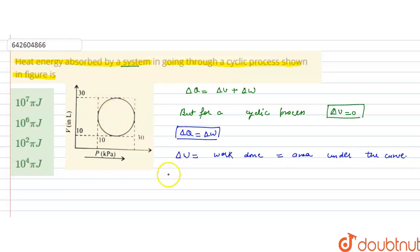So, its area will be pi R square. So, we will write delta W is equals to area under the curve, that is, equals to pi R square. Now, we are given this. So, this will be the diameter.